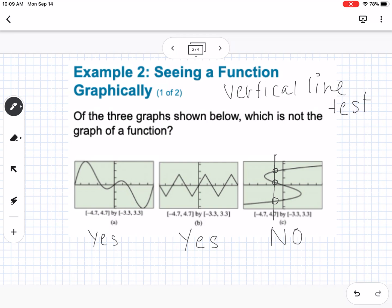So remember, the vertical line test is passing a vertical line across the graph. It should only touch in one spot no matter where you put the vertical line. So if it does not pass, then it is not a function.